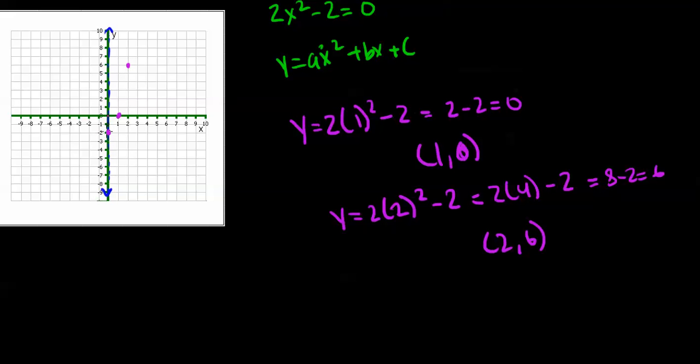Now we connect all the dots on one side of the axis of symmetry. Then we reflect it across the axis of symmetry. Here you can see we've produced both sides of the parabola.